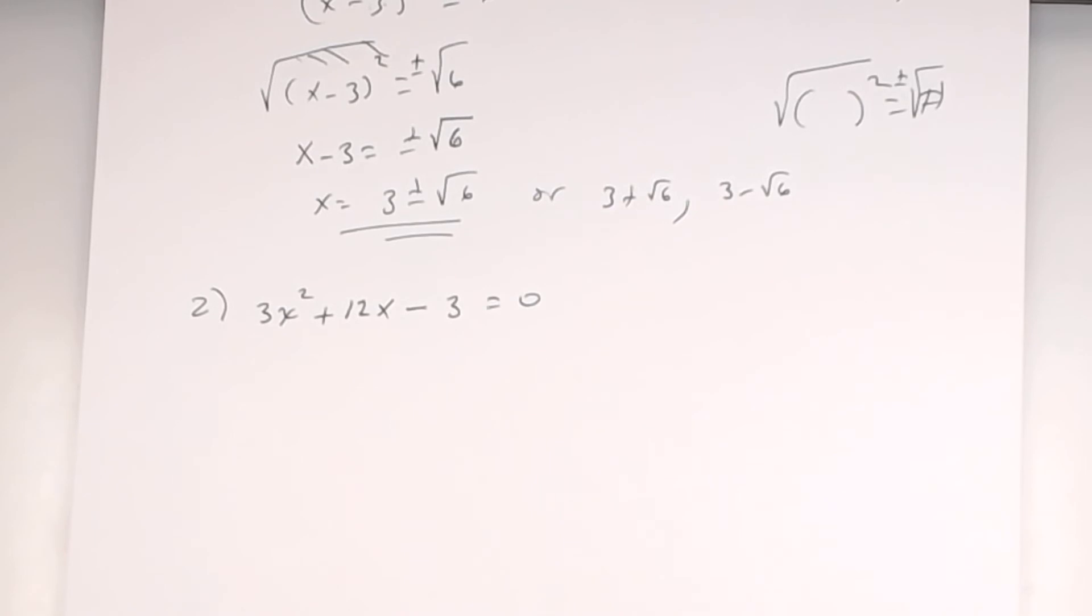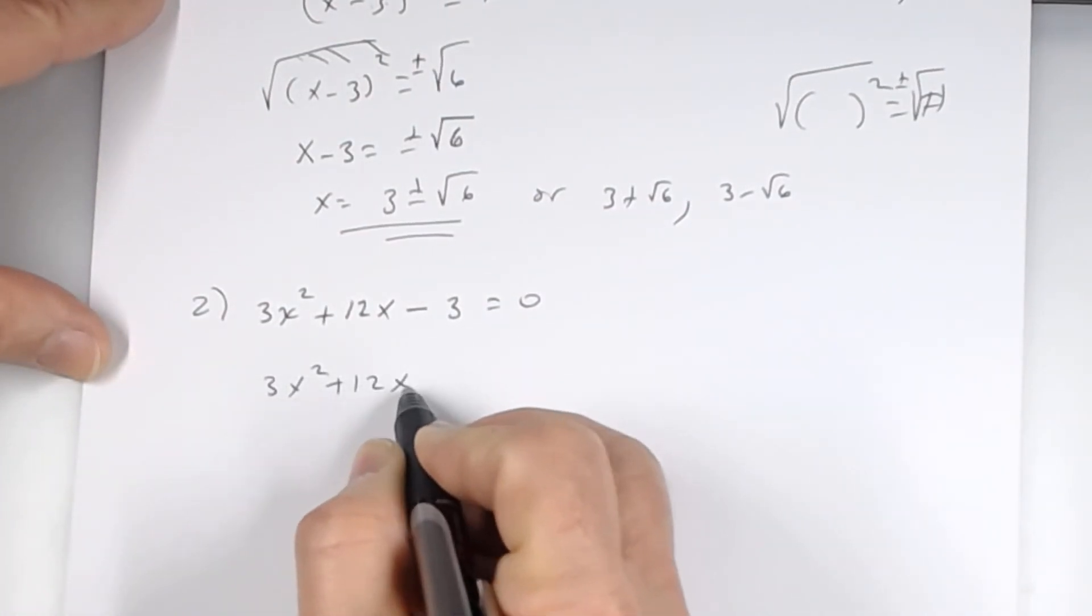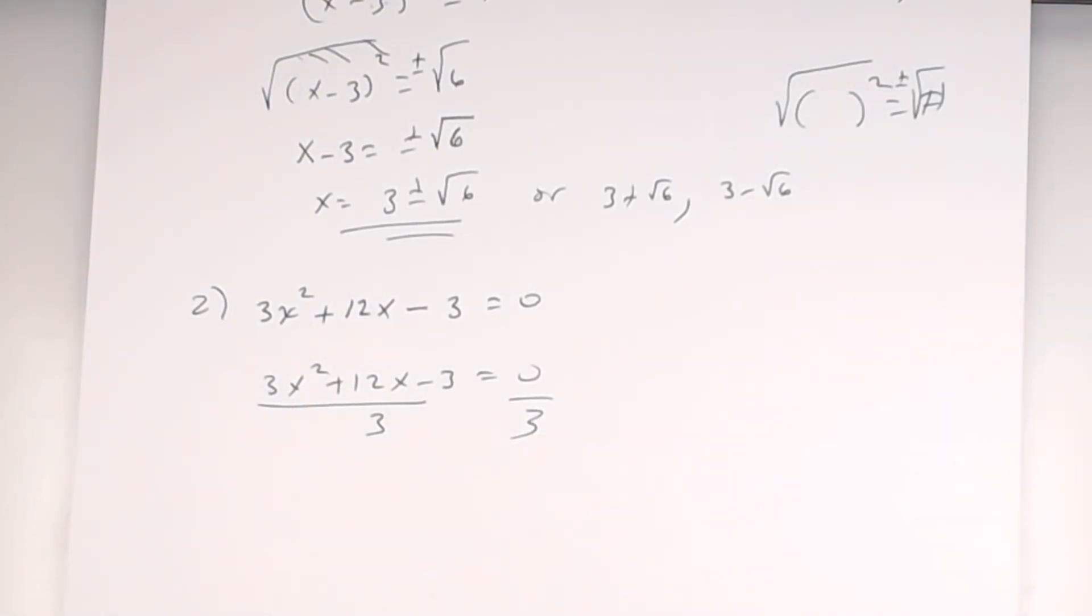What I do to one side, I do to the other, right? I'm going to go ahead and write this over. Just like this. Divide the left side by 3. I divide the right side by 3.